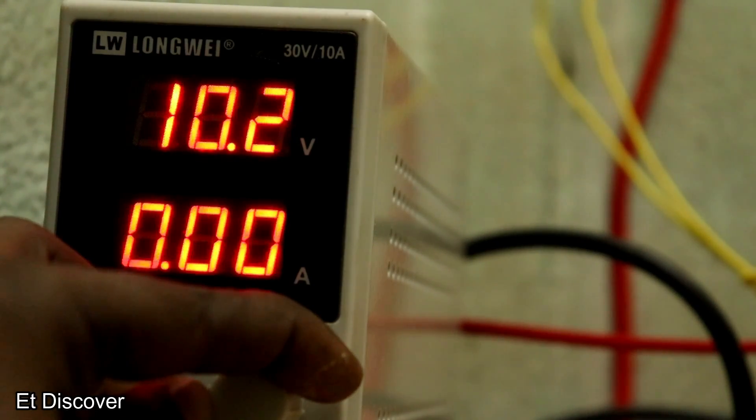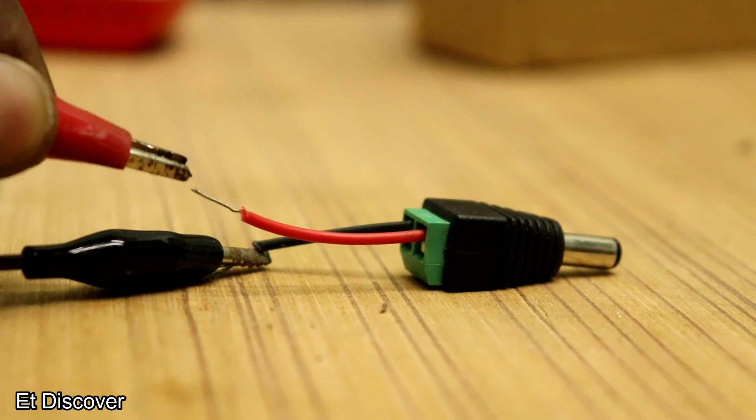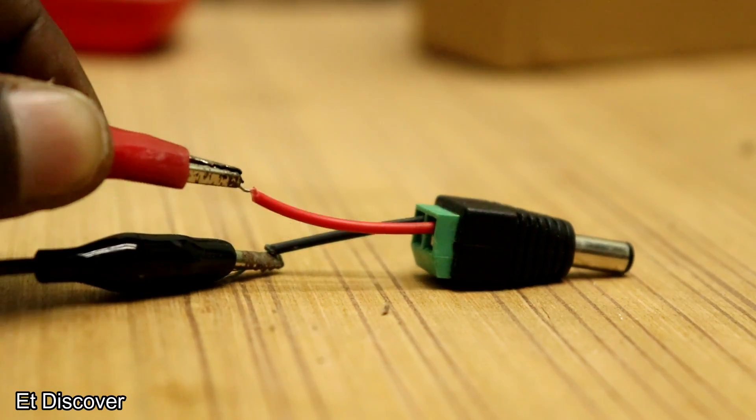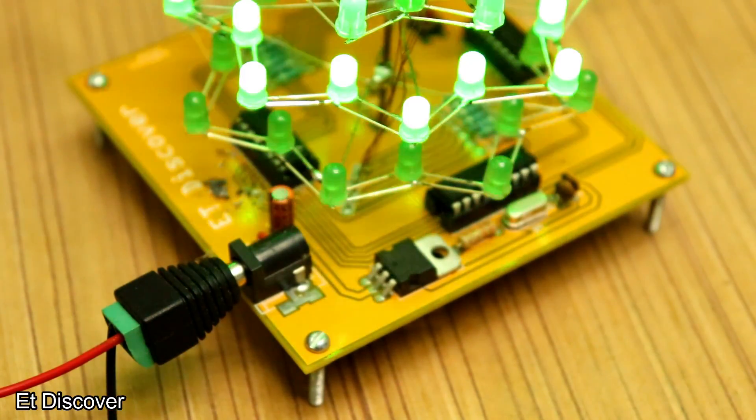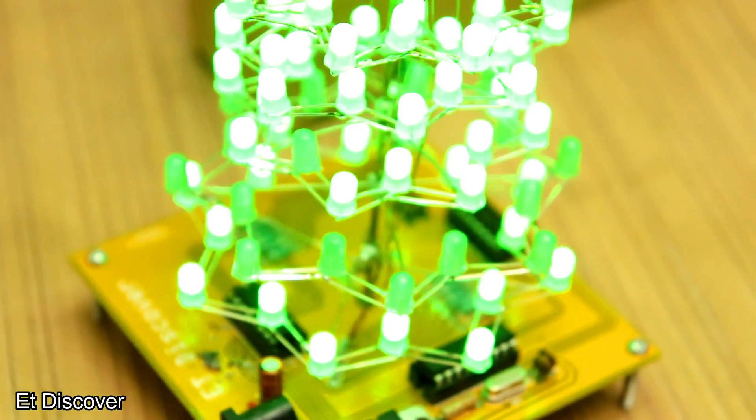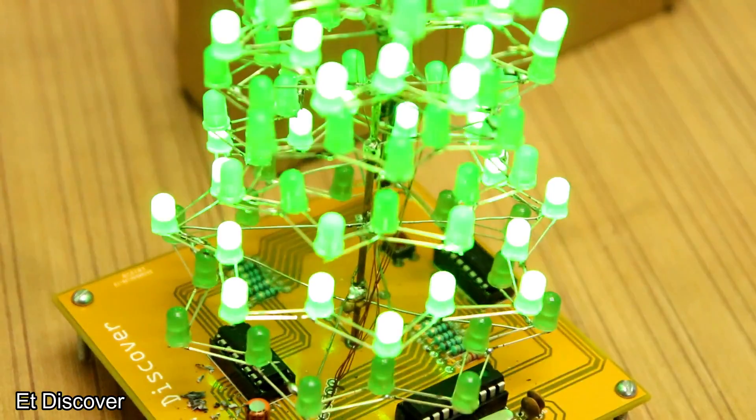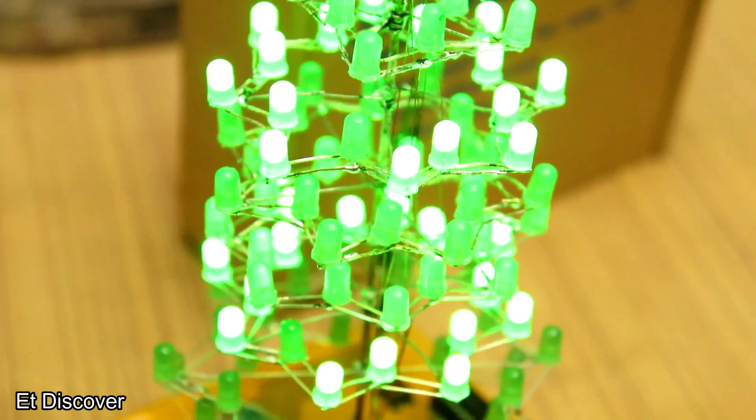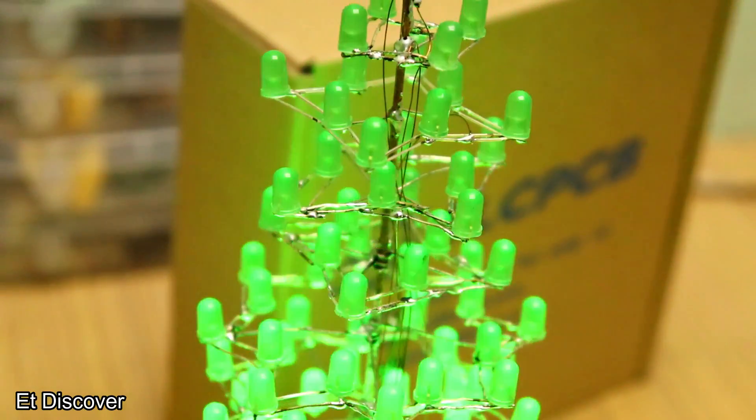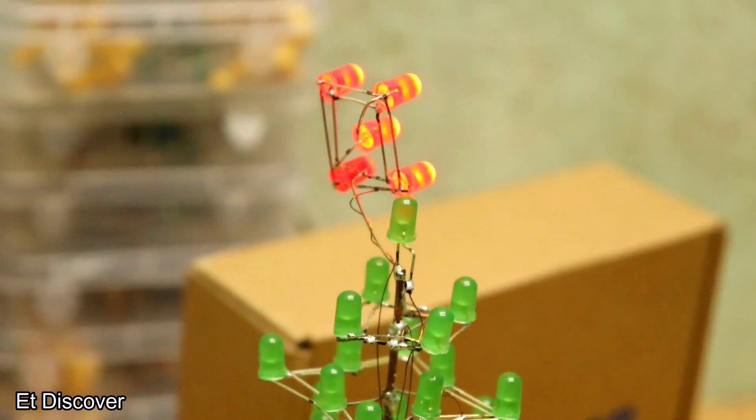I set my power supply at 10 volts and connect this DC male socket and insert the jack in the board. And see it is working absolutely fine. And the thing of happiness is it is consuming 30mA while it is running. That means you can run this Christmas tree for 10 hours with a 9 volt battery.